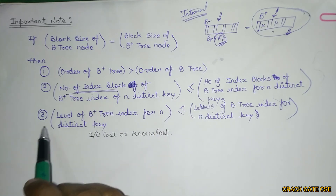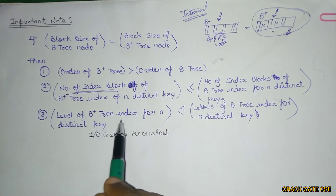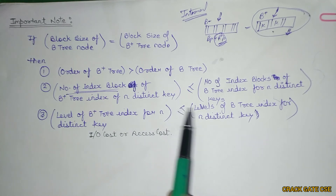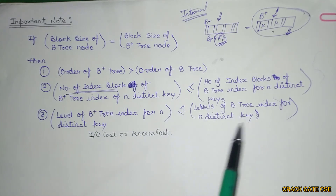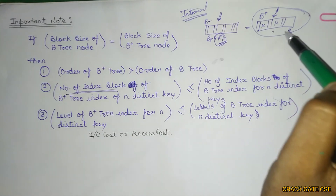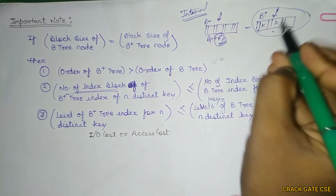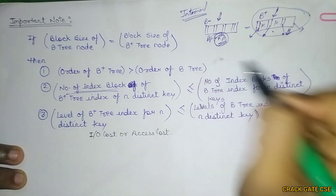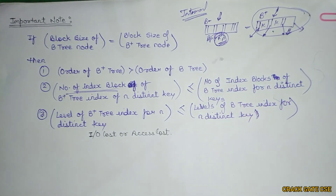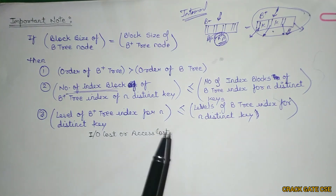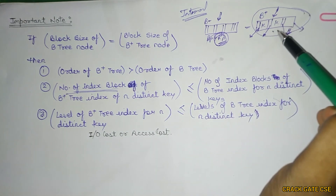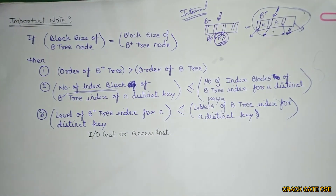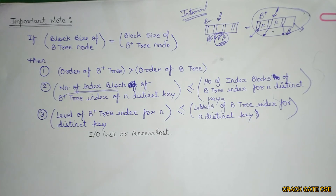The third property: the number of levels in a B+ tree index for N distinct keys will be less than the levels in a B tree for N distinct keys. There will be fewer levels because we can store more index entries at each level, again due to utilizing the record pointer space. Because of this, the IO cost or access cost will be less in B+ tree compared to a simple B tree.